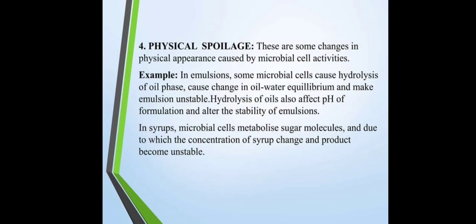Fourth is physical spoilage. These are changes in physical appearance caused by microbial cell activity. For example, in emulsions some microbial cells cause hydrolysis of the oil phase, causing change in the oil-water equilibrium and making the emulsion unstable. Hydrolysis of oils also affects the pH of formulation and alters the stability of emulsion. In syrups, microbial cells metabolize sugar molecules, changing the concentration of the syrup and making the product unstable.